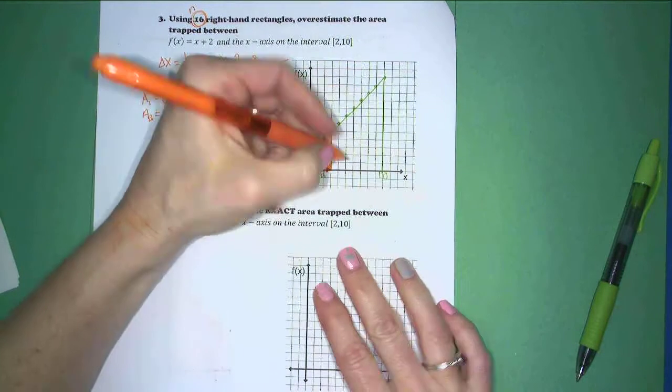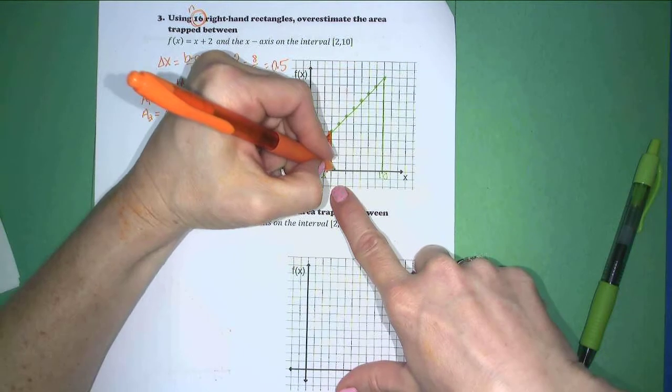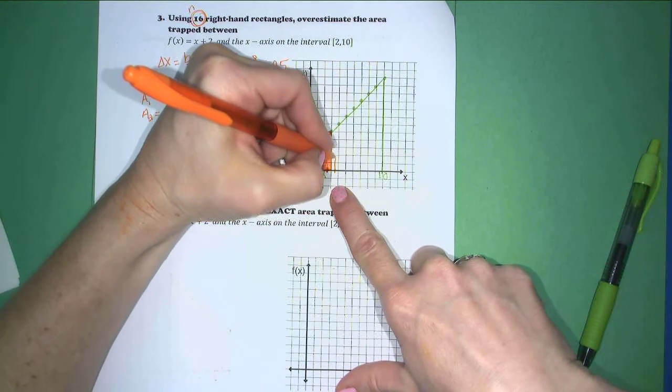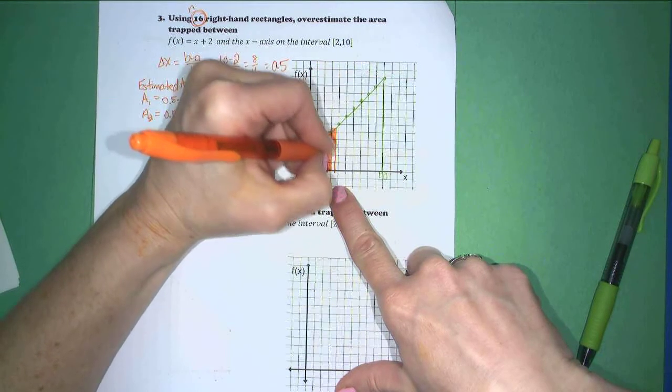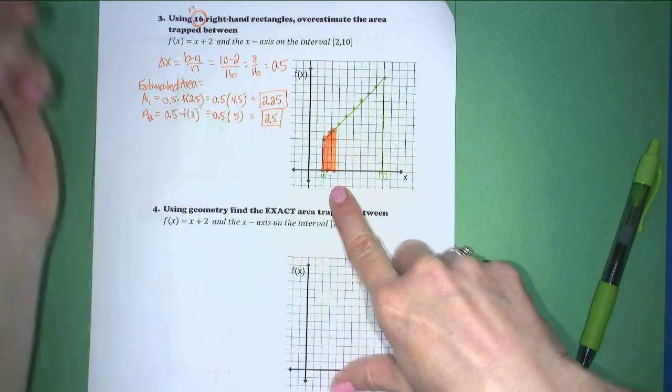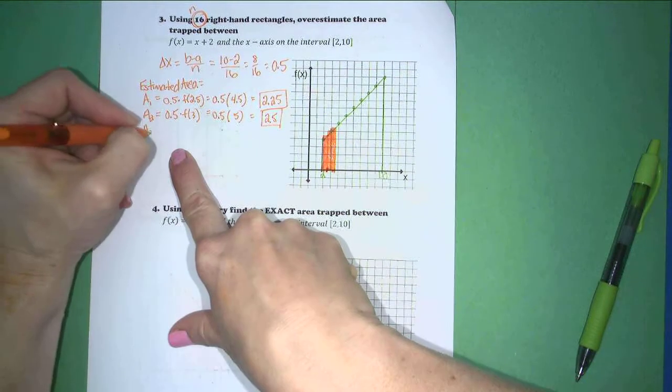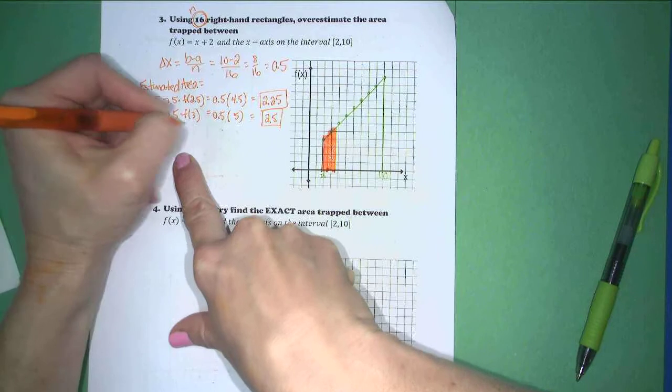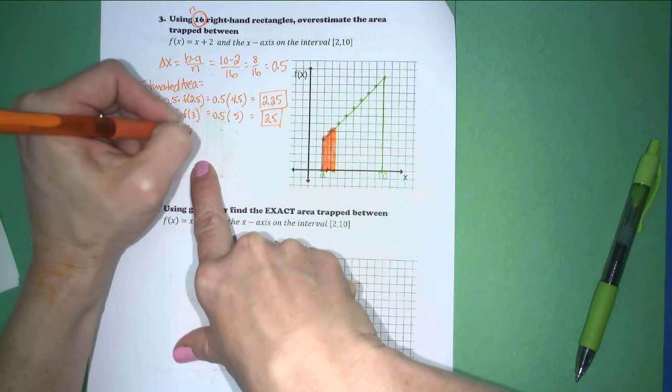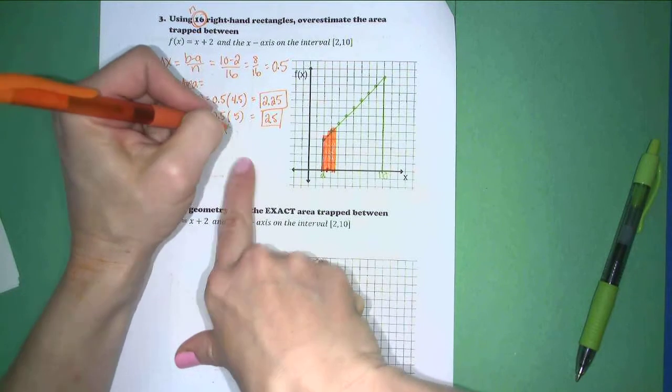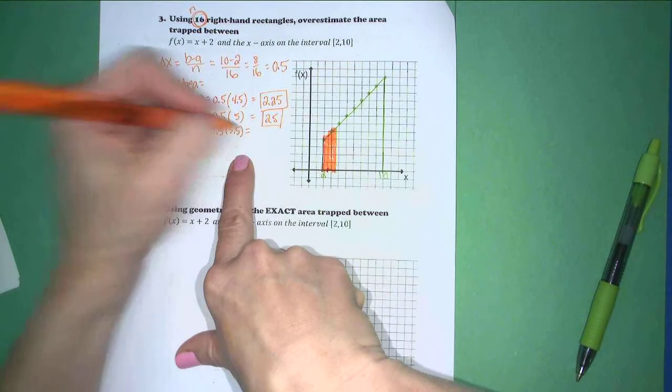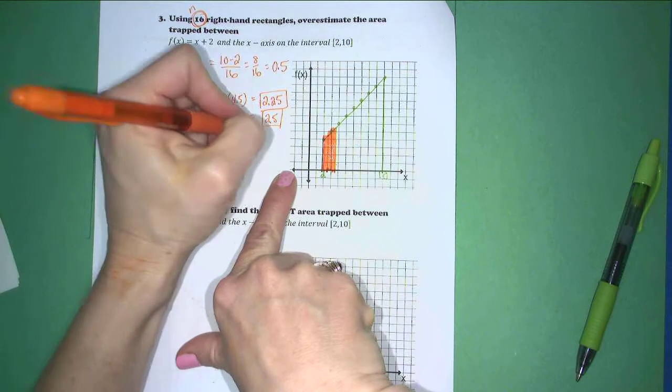The next rectangle will run from 3 to 3.5. I'm going to have to evaluate f of 3.5. Color that in. So area 3 will be 0.5 times f of 3.5, which is 0.5 times 5.5, and that is going to be 2.75.